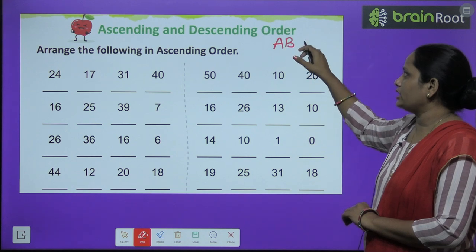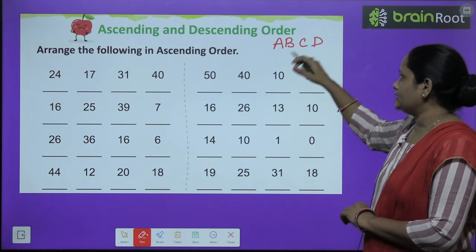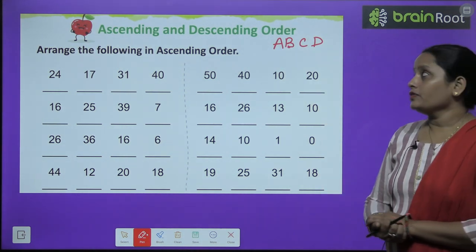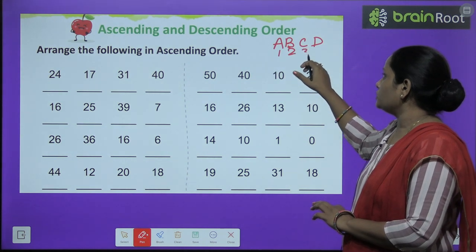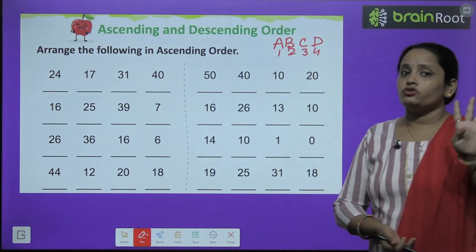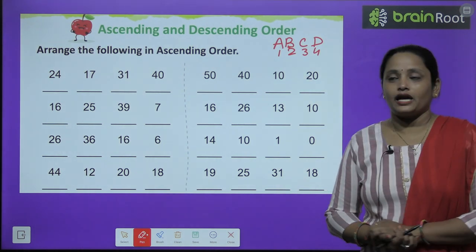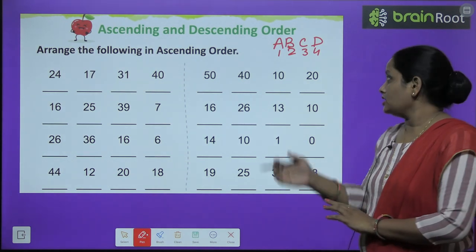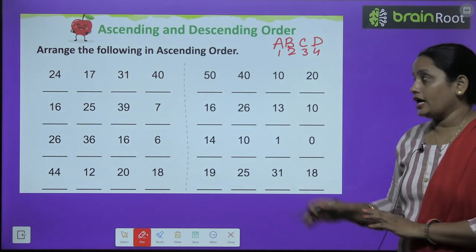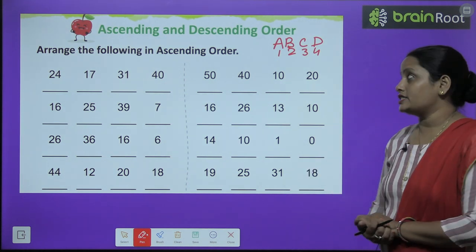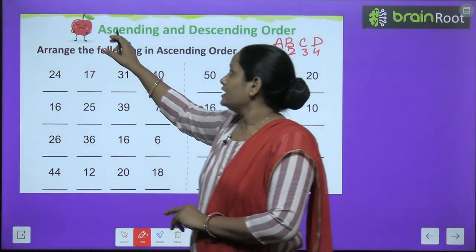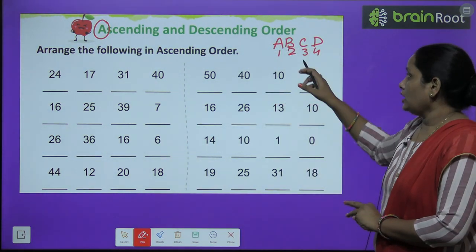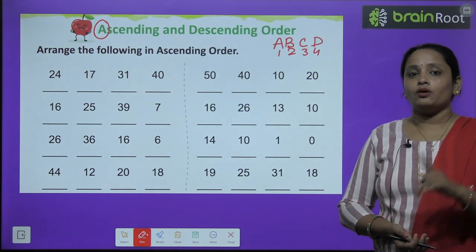Sabko I think counting toh aati hogi. A, B, C, D. Aati hai sabko? So ye jo humare letters hain. Ab hum inhe count karenge: one, two, three, four. Kitne letters hain? Four letters hain. Letter A one number pe hai. Letter B two number pe. Letter C third number pe hai. Aur letter D fourth number pe hai. Toh ascending order mein jo pahla word kya hai? A. Toh A kaunse number pe hai? One number.